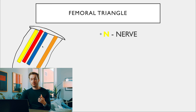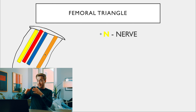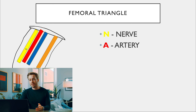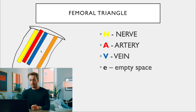For the femoral triangle, thinking from outside to inside, the order of structures is: nerve, artery, vein, empty space, and lymphatics — NAVEL.